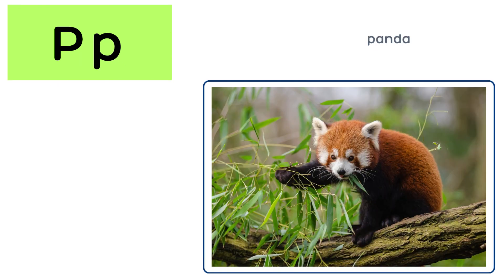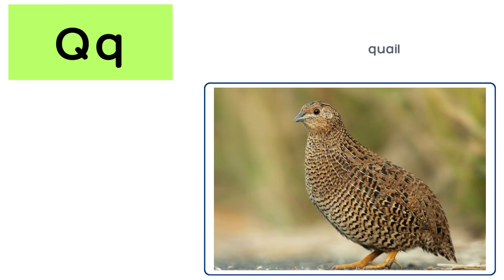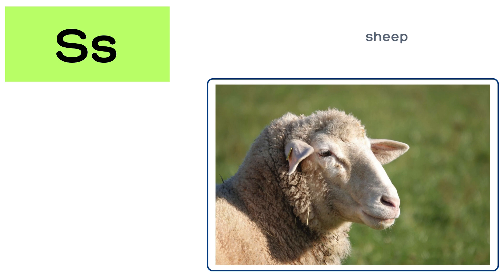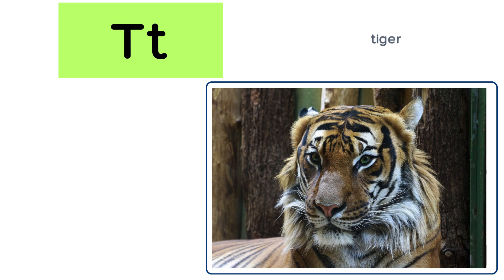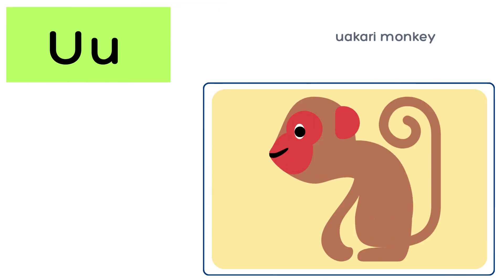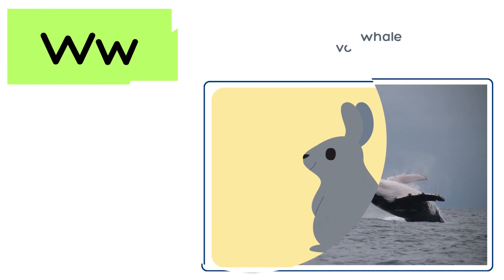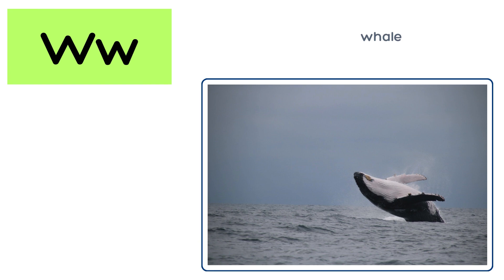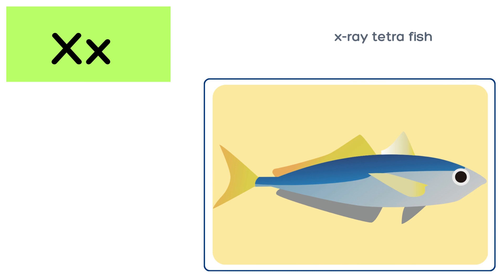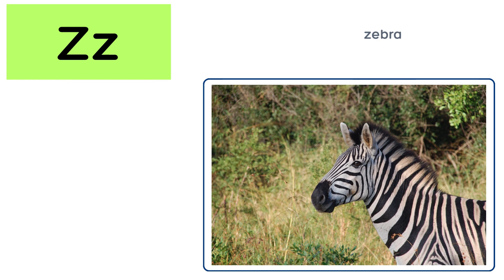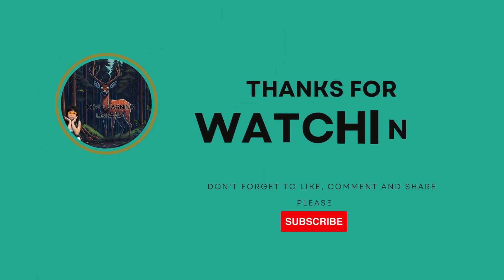E for Panda. U for Quay. R for Rhinos. W for Whale. Comment and Share.